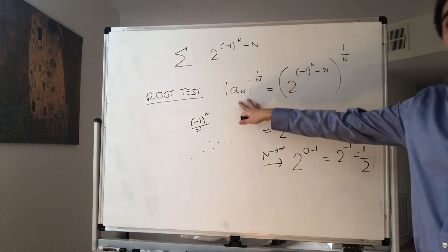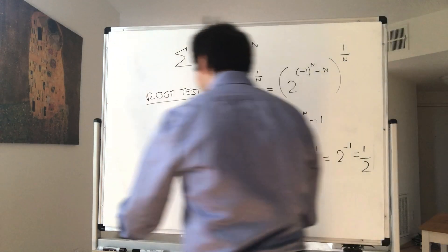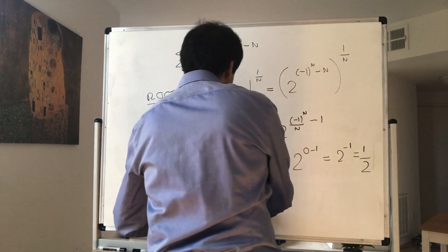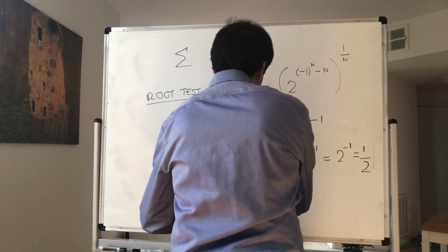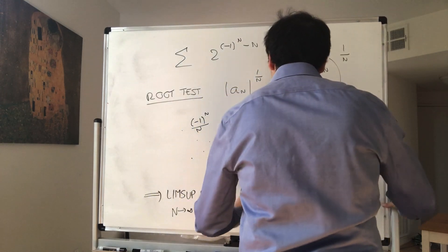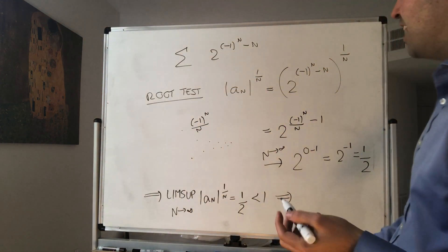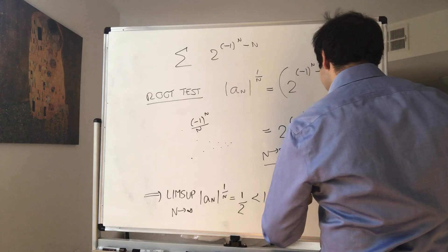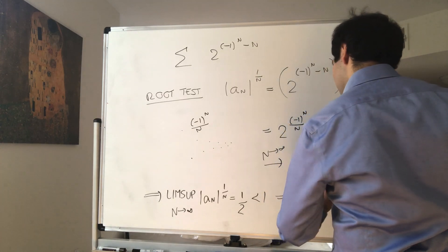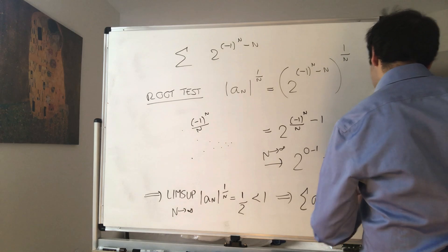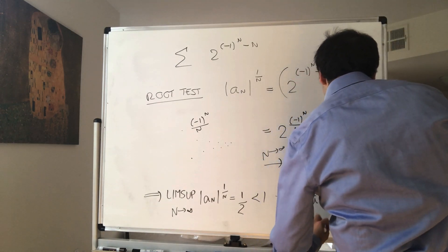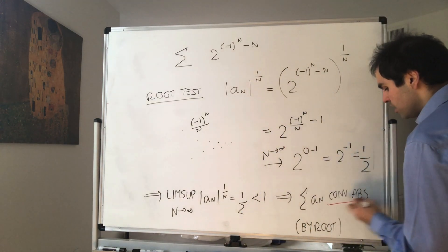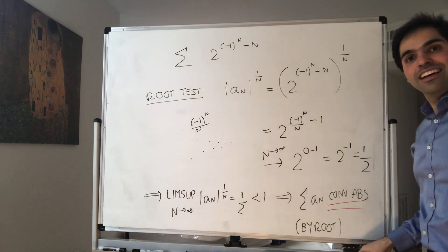Since the limit of the nth root is 1/2, in particular the lim sup of the root is 1/2, which is less than 1. Therefore we conclude that this stock market series converges absolutely by the root test. So the answer is: not inconclusive — by the amazing root test, it actually converges absolutely. Thank you very much!